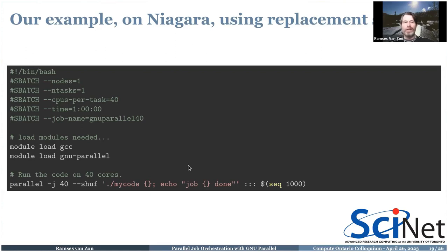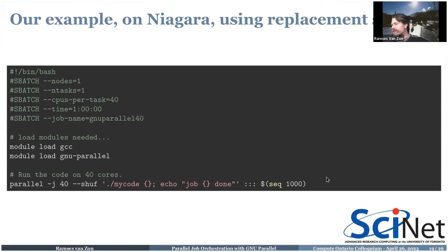So the GNU Parallel command in the job script now reads: 'parallel --shuf my_code {} "echo job done" ::: $(seq 1 1000)' — the top of the job script is unchanged, the parallel command handles everything, and a sequence of a thousand numbers is generated inline.